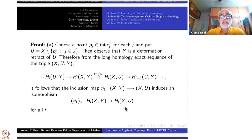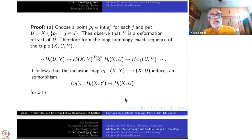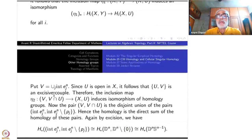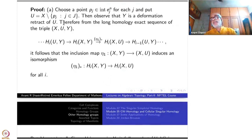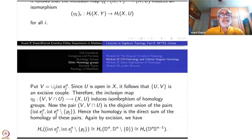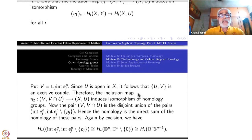Now put V equal to the disjoint union of all the interiors of these cells. Then U is open in X, and V is open. So (U, V) is an excisive couple, and U ∪ V is the whole space X. Therefore, the inclusion map of the pair (V, V∩U) into (X, U) induces an isomorphism in homology groups by the excision theorem.